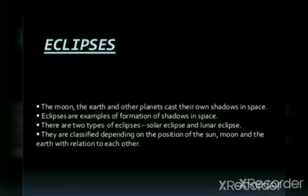What are eclipses? As in my last video, we discussed about shadow. Eclipses are related to shadow. The moon, the earth and other planets cast their own shadow in space. Eclipses are the example of formation of shadow in space. There are two types of eclipses: solar eclipse and lunar eclipse. They are classified depending on the position of the sun, moon and the earth with relation to each other.